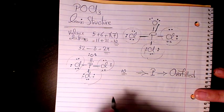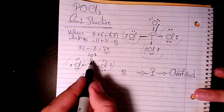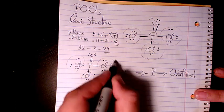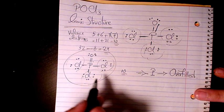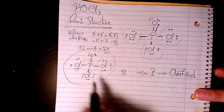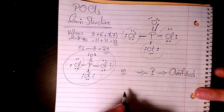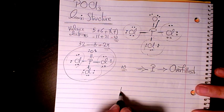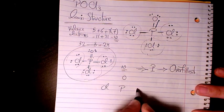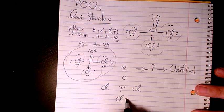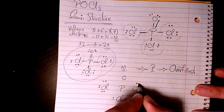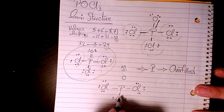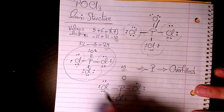There is also another Lewis structure for POCl3 which is not as accurate as this one, but it is sometimes common, so it's okay to write it like that. We place two, four, six electrons as lone pairs around each chlorine and around the oxygen.